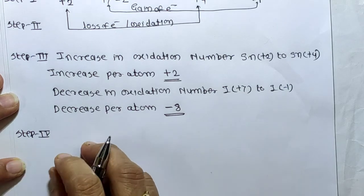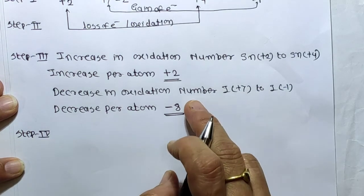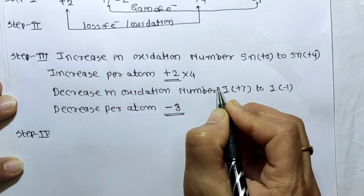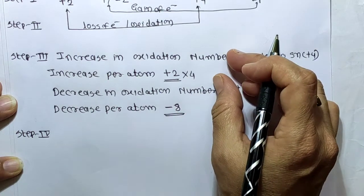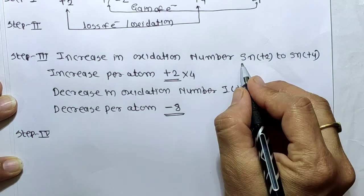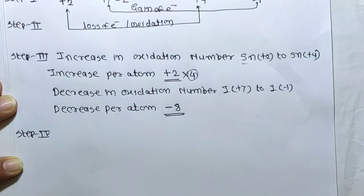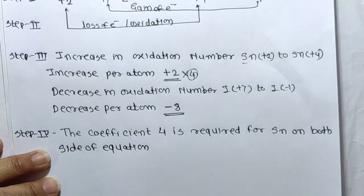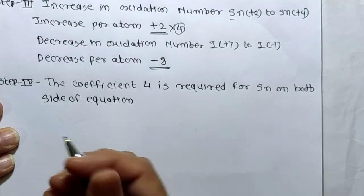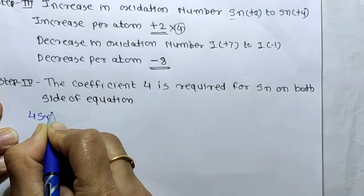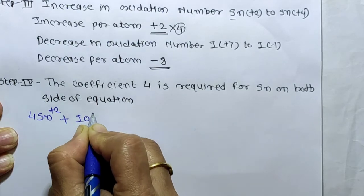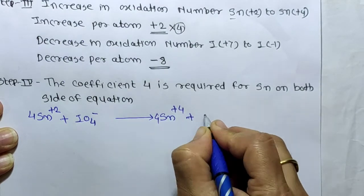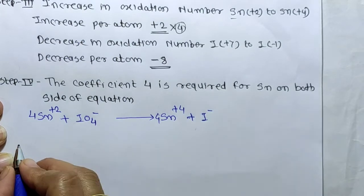In step four, choose the factor that will equalize the net increase and net decrease. Both factors become equal when we multiply by 4 — 4×2 = 8. So coefficient 4 is required for Sn on both sides of the equation. The equation becomes: 4Sn²⁺ + IO₄⁻ → 4Sn⁴⁺ + I⁻.